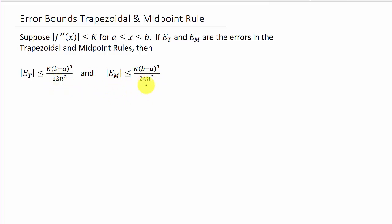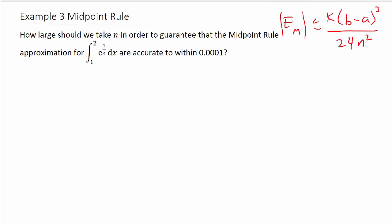You can see they're pretty much the same — we've got 12 for the trapezoidal and 24 for the midpoint, so they're going to be similar. So let's look at example three. They want us to find how large n should be in order to guarantee that the midpoint rule approximation for the integral of e^(1/x) dx from 1 to 2 is accurate to within 0.0001.